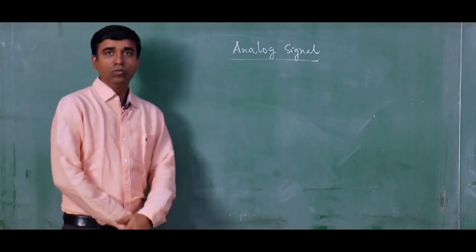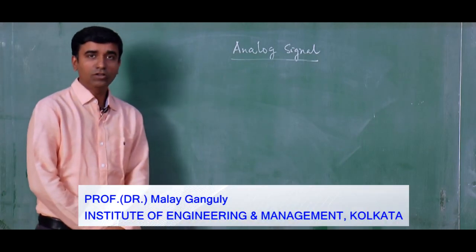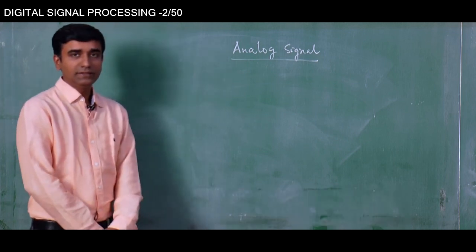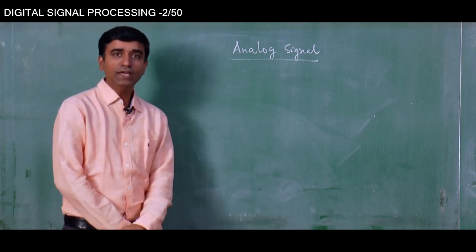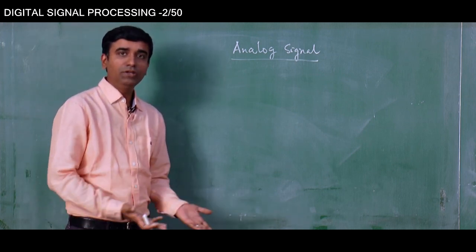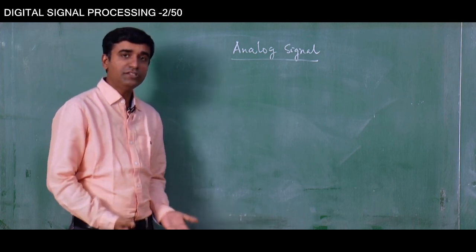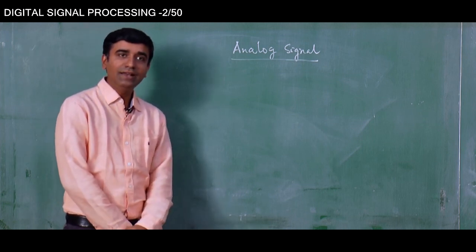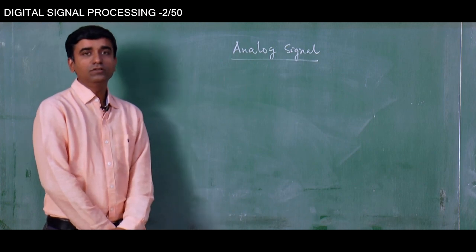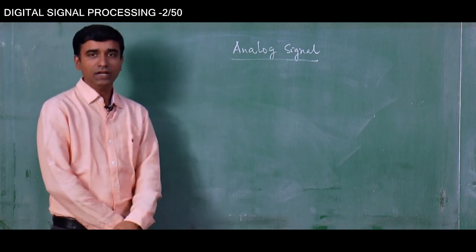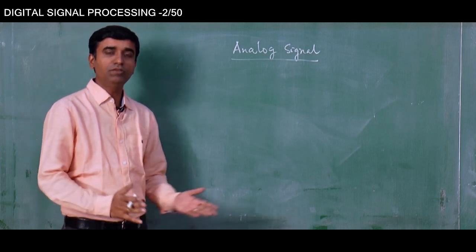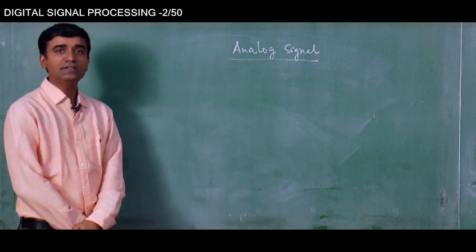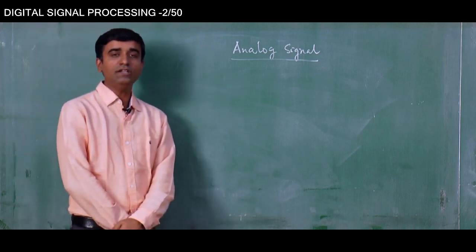What is meant by an analog signal? In the last lecture we already discussed that the term analog means unique and it cannot be compared with others — it is, in a sense, original. All the signals that are readily available in nature are of analog nature, meaning they are unique and cannot be compared with each other. Analog signals are signals which are continuous in time.